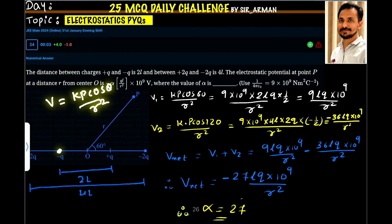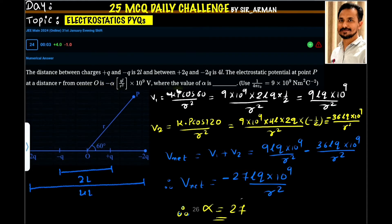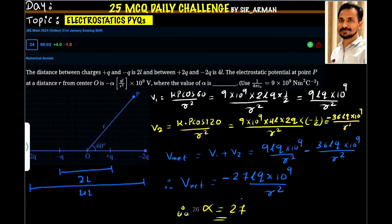This is the equation for the dipole whose length is 2L. The electric potential is given by Kp cos 60, because the dipole moment is in this direction and the displacement vector to point P is in this direction, making the angle 60 degrees. So here it is Kp cos 60 by R squared. K is 9 times 10 raised to 9, and P for this dipole — the dipole moment — is 2L.